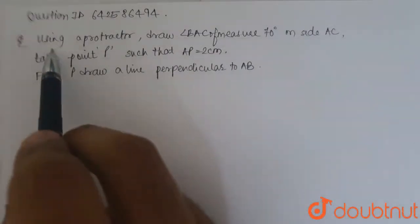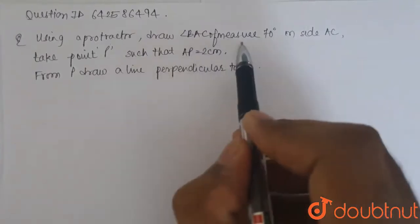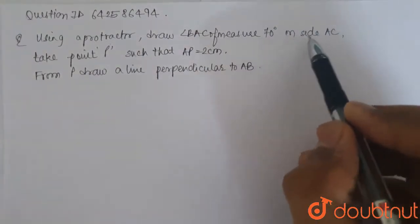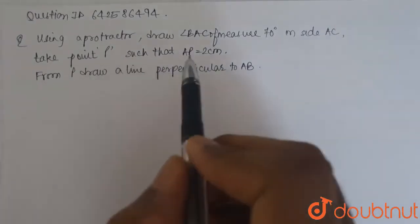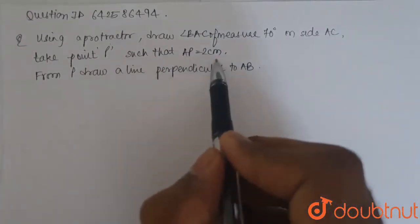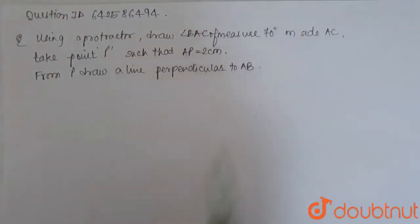The question is, using a protractor, draw angle BAC of measure 70 degrees. On side AC, take a point P such that AP is 2cm and from P, draw a line perpendicular to side AB.